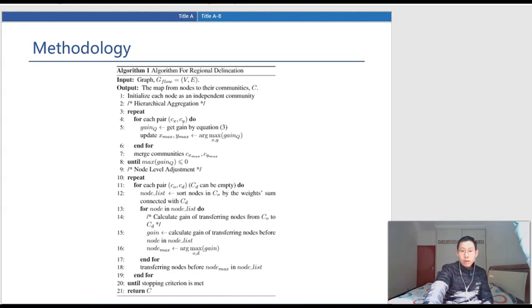In the step of node moving strategy, the proposed algorithm will traverse any possible community pair and move nodes with the highest gain into a new community. Note that the target community can be empty, so that our algorithm is able to deal with the situation of community splitting and search for more possible solutions. For speeding the process, we pre-sort all nodes within the community according to their degrees, which will help the algorithm quickly find the target nodes.